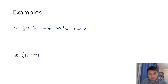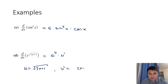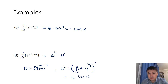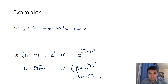From the rule for the derivative of e^u, if u = √(3x + 1) = (3x + 1)^(1/2), the derivative is e^u · u′. To find u′, apply the power rule: (1/2)(3x + 1)^(−1/2) times the derivative of the inside, which is 3. So u′ = 3/2 · (3x+1)^(−1/2). Writing everything out, the derivative of e^√(3x+1) is e^√(3x+1) · 3/(2√(3x+1)).